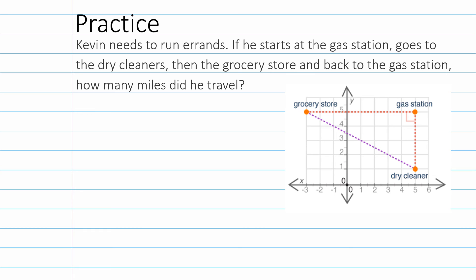So, Kevin needs to run errands. If he starts at the gas station and goes to the dry cleaners, then to the grocery store, and back to the gas station, how many miles did he travel? So we really just want to find all three distances and add them together, right? Pretty simple. So, we can start by adding 1, 2, 3, 4. We've got 4 on the one side. 1, 2, 3, 4, 5, 6, 7, 8 on the other side. Now, just in case we have bad eyes or we miss a line, I want to do the actual work.